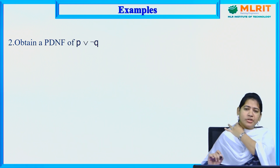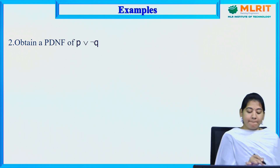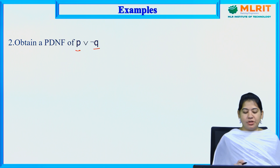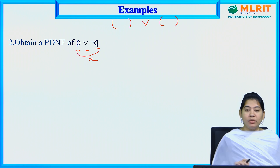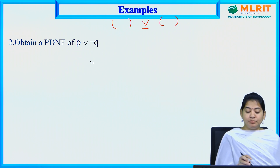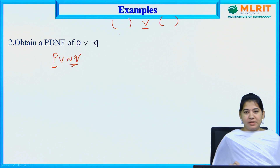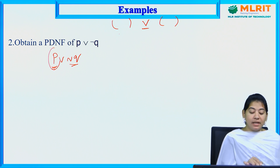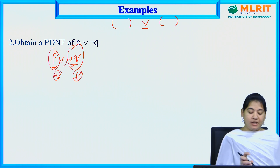Let us solve one more question: obtain the PDNF of P ∨ ¬Q. Here we have P and ¬Q — only two variables. This middle expression is a sum but not min terms yet. To get the sum of min terms, all variables must appear in each term. In P, the variable Q is missing; in ¬Q, the variable P is missing. We need to add Q and P respectively to convert these into min terms.